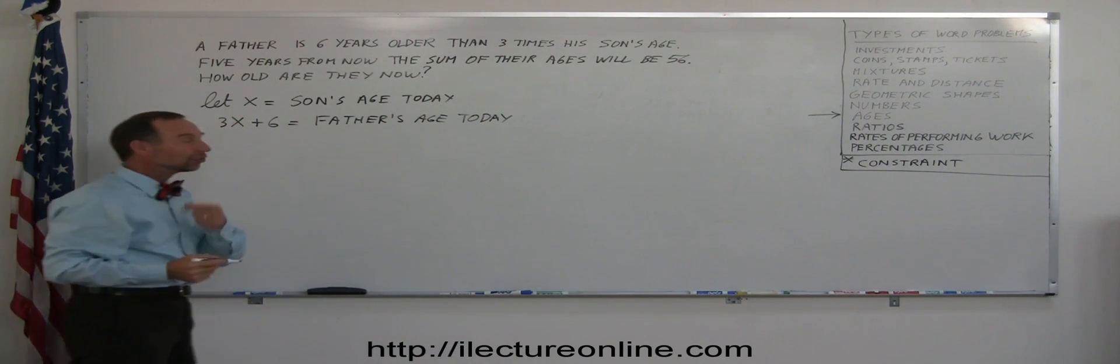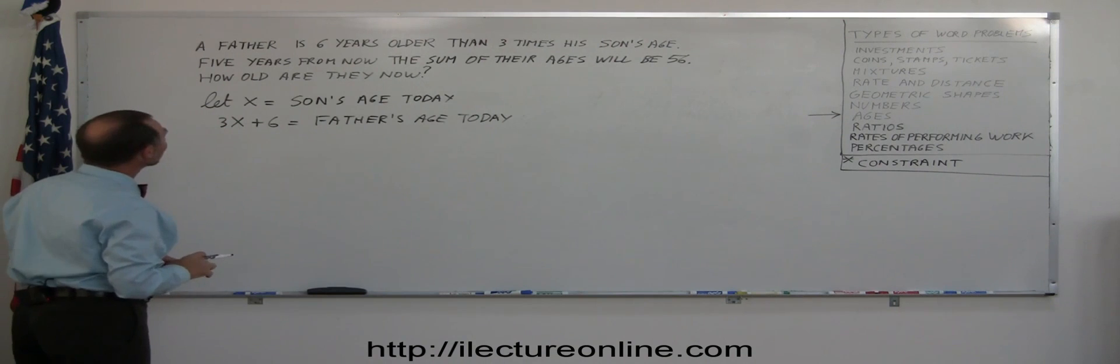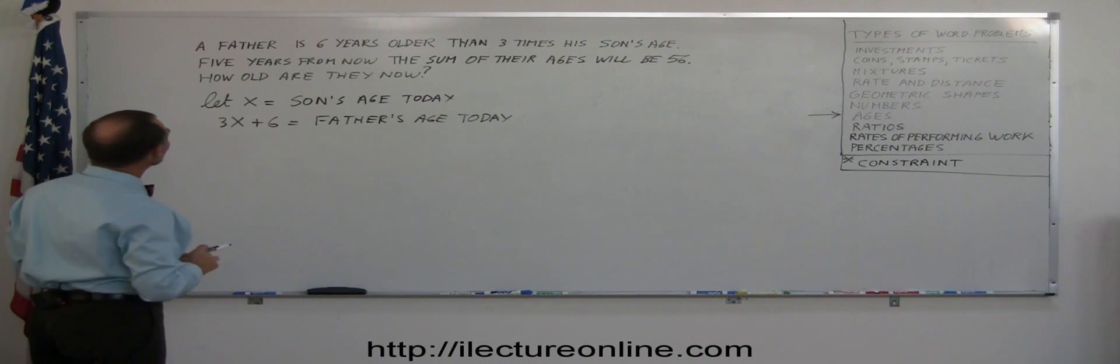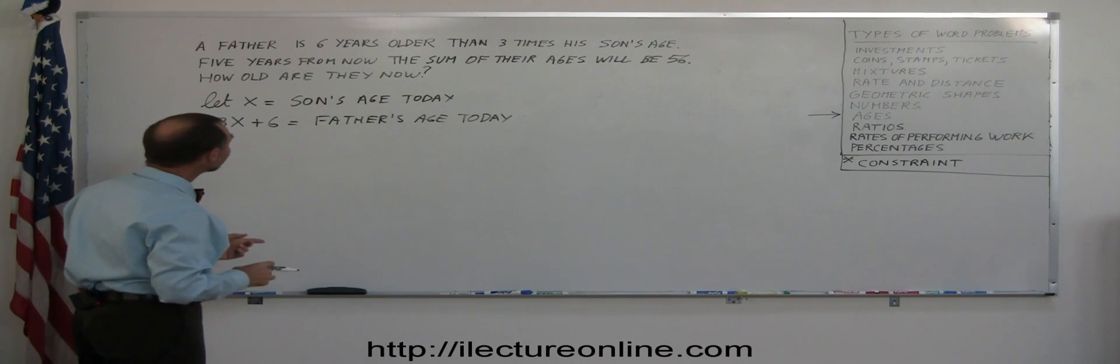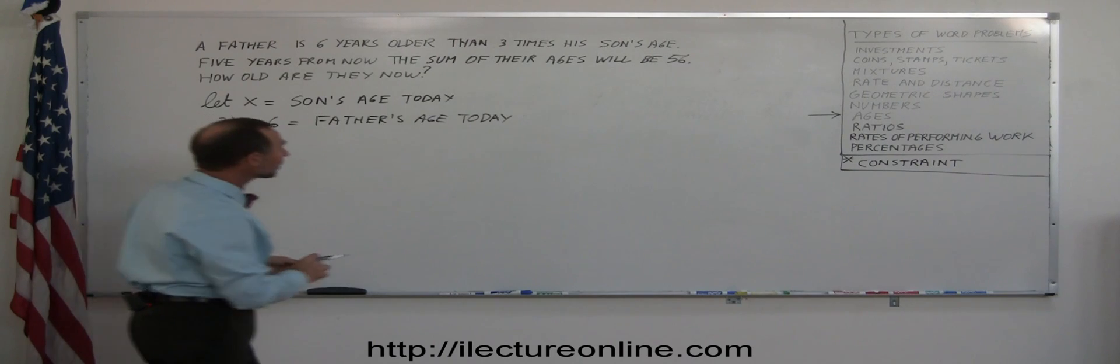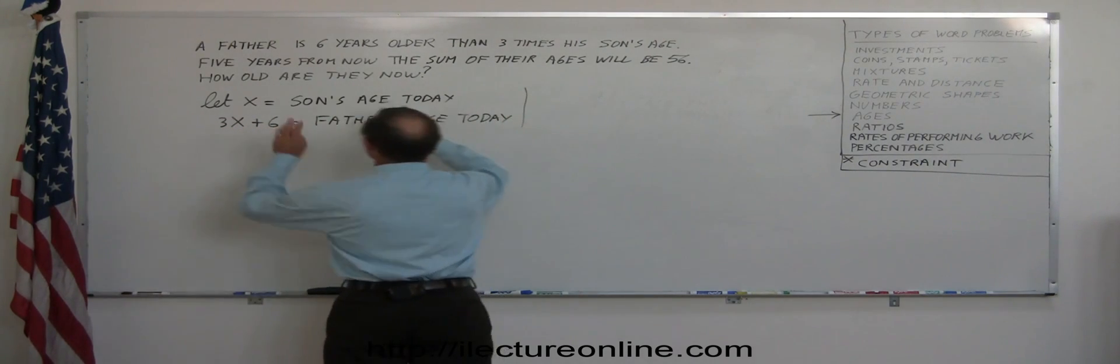Okay, now that we have the ages defined in terms of X, we want to look for a constraint. It says five years from now, the sum of their ages will be 56. So that's a constraint. But they're determined in terms of what their ages will be in five years. So if these are their ages today, then in five years, how do we represent their ages then?